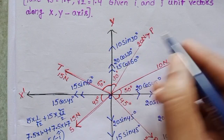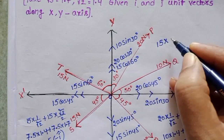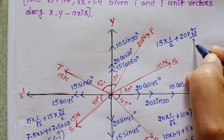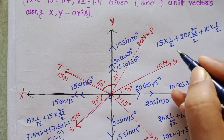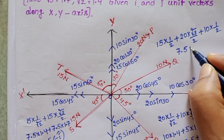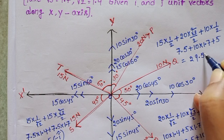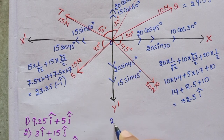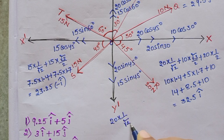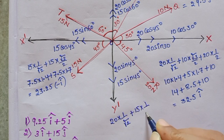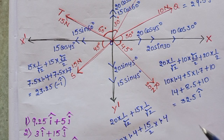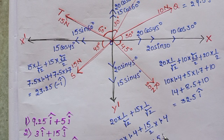Along the positive y direction: 15 cos 60 (value 1/2) plus 20 cos 30 (root 3 over 2) plus 10 sin 30 (1/2), giving approximately 29.5 j-cap. And along the negative y axis: 20 sin 45 (1 over root 2) plus 15 sin 45 (1 over root 2), so 10 root 2 (1.4) plus 15 over 2 times 1.4, giving minus 24.5 j-cap.